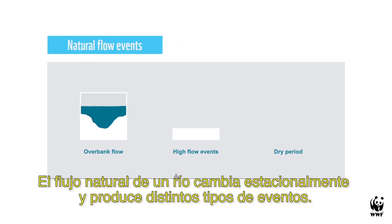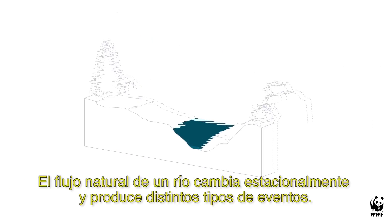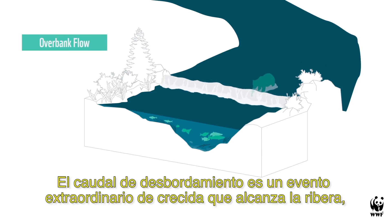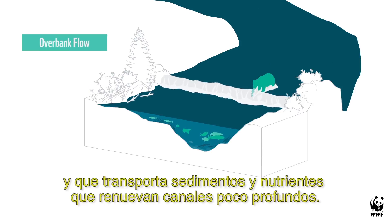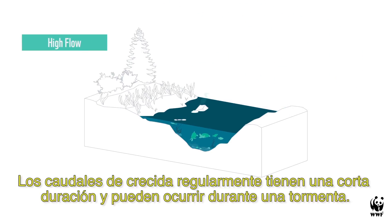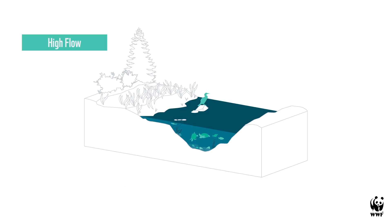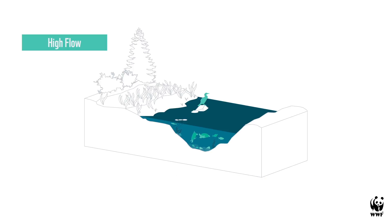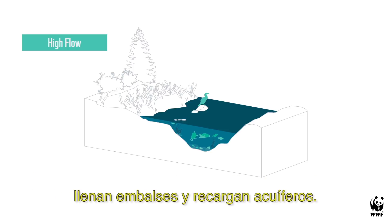A river's natural flow pattern changes seasonally and produces various types of flow events. An overbank flow breaches riverbanks, transports sediment and nutrients, and revitalizes shallow channels. A high flow is usually short in duration and can occur during a rainstorm. It can trigger the movement, birth and expansion of many species throughout the watershed and replenish reservoirs and groundwater.